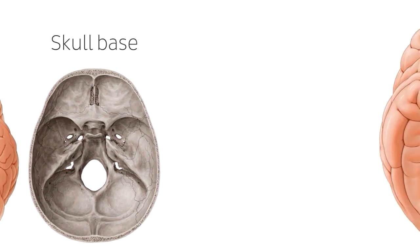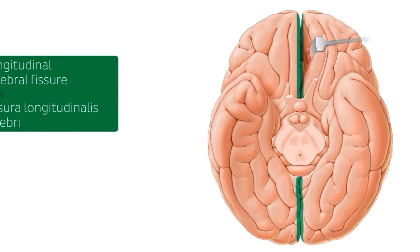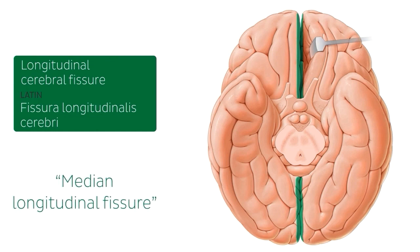Now we're going to remove the cerebellum and the brain stem to be left with just the structures that we find on the basal view of the brain. The first structure that we're going to be talking about is the longitudinal cerebral fissure. This structure is very prominent and clearly definable, and it is also known as the median longitudinal fissure. This deep groove separates the two hemispheres of the brain. In the depth of the longitudinal fissure lies the corpus callosum, which you can see a little bit here, and inside the fissure is then located the falx cerebri.